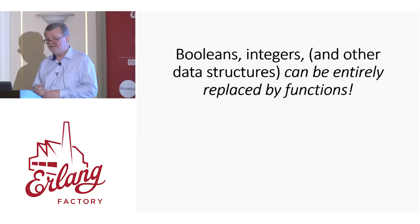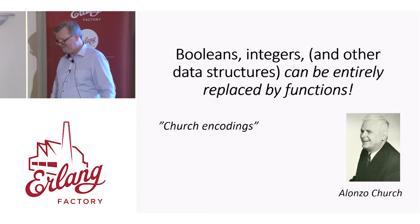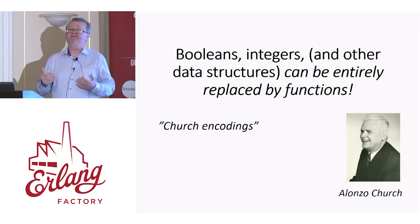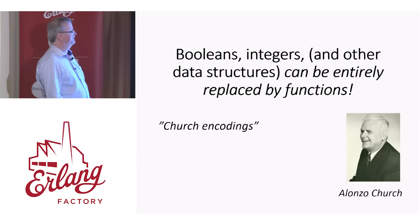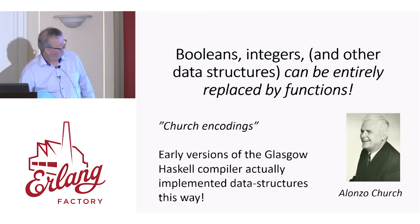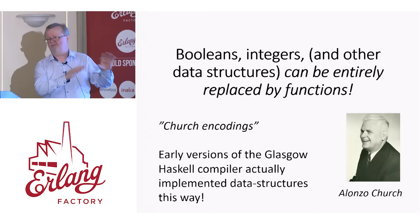The man who discovered this was Alonzo Church. These things are called Church encodings. Church wanted to show that functional programming could be a foundation for mathematics — you didn't need anything else to build up all the rest of mathematics; you could create Booleans, numbers, and so on. He had a theoretical interest in this. But actually, early versions of the Haskell compiler represented data structures this way — not integers, of course, that would be silly — but data structures were represented by Church encodings.